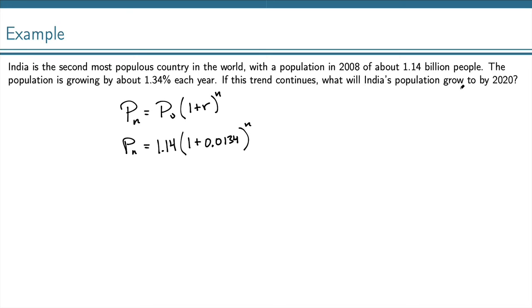To find India's population in 2020, that is 12 years after 2008, we plug 12 in for n. So p sub 12 is 1.14 times 1.0134 to the 12. Plugging this into our calculator gives us approximately 1.337, and of course, this is in billions.